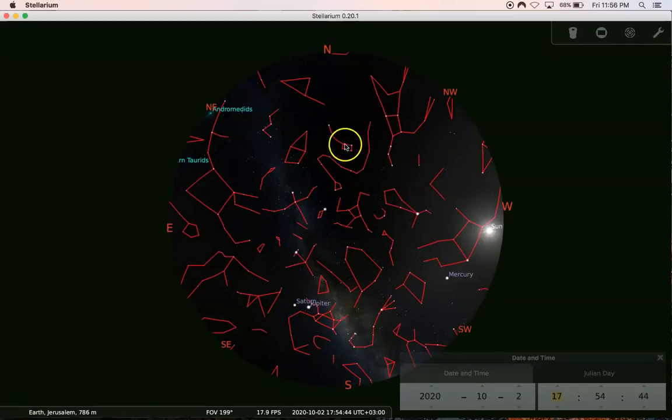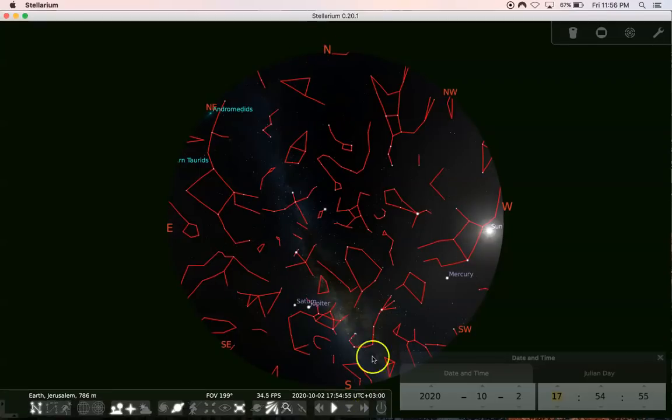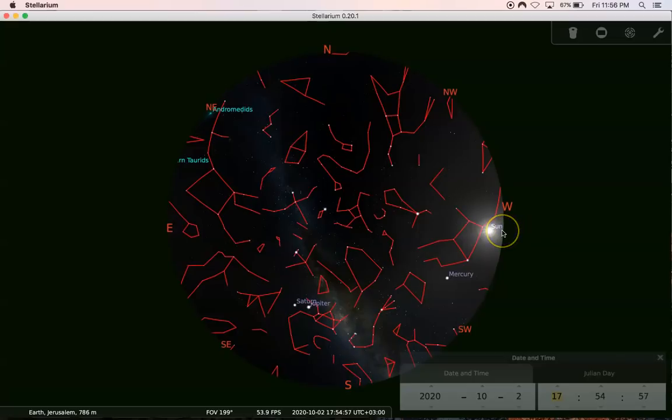It's almost six o'clock in the evening. The sun is setting and this is going to be the evening before Sukkot, before Tabernacles. Here's Draco, the dragon, the great red, fiery dragon. This is the North Pole Star, so everything's going to rotate around the North Pole Star. Here's North, here's South, and you can see the sun is about to set in the West.